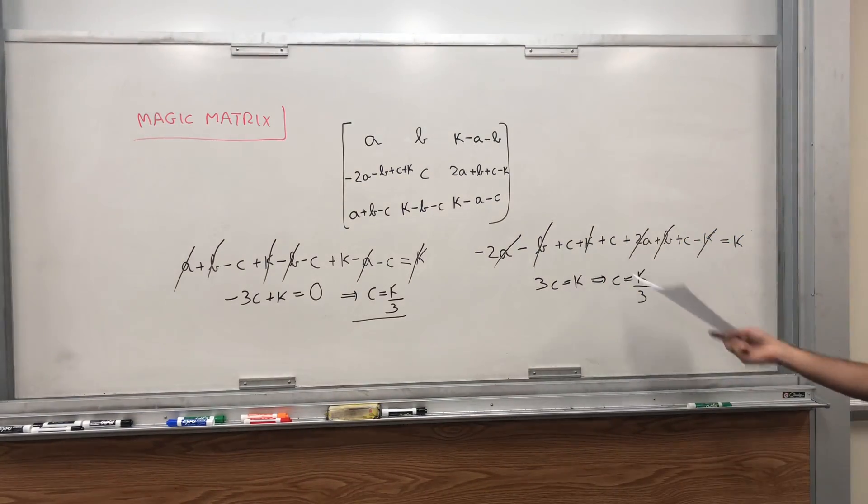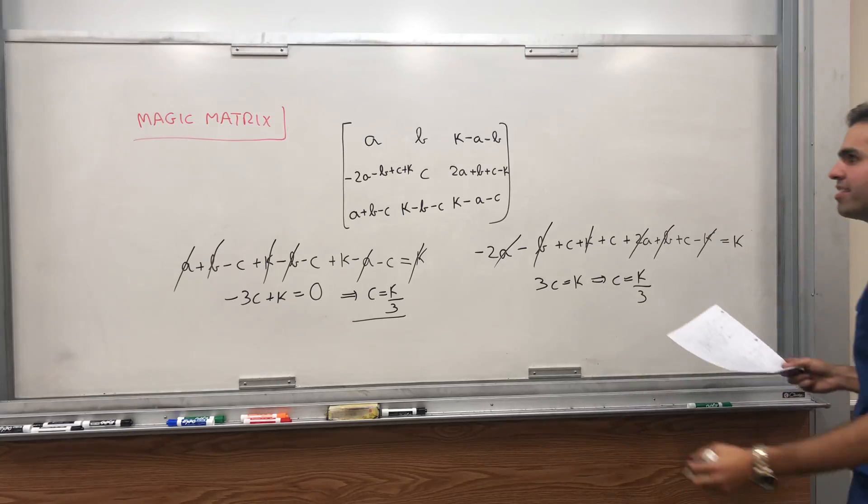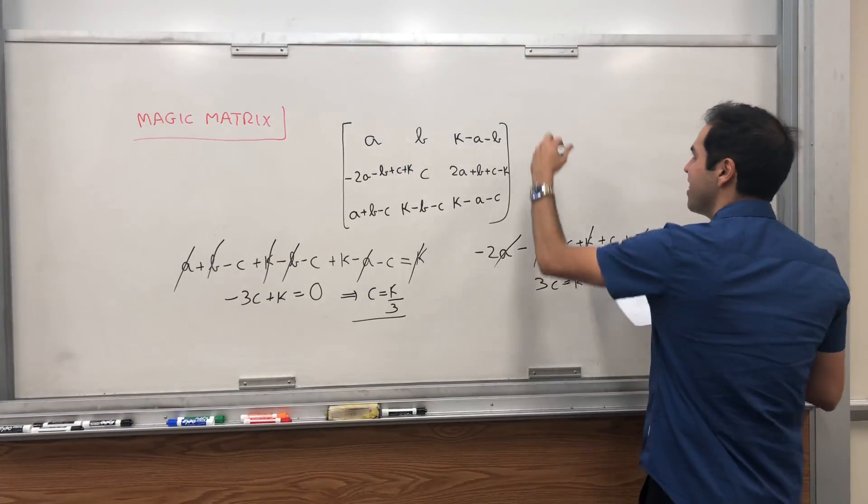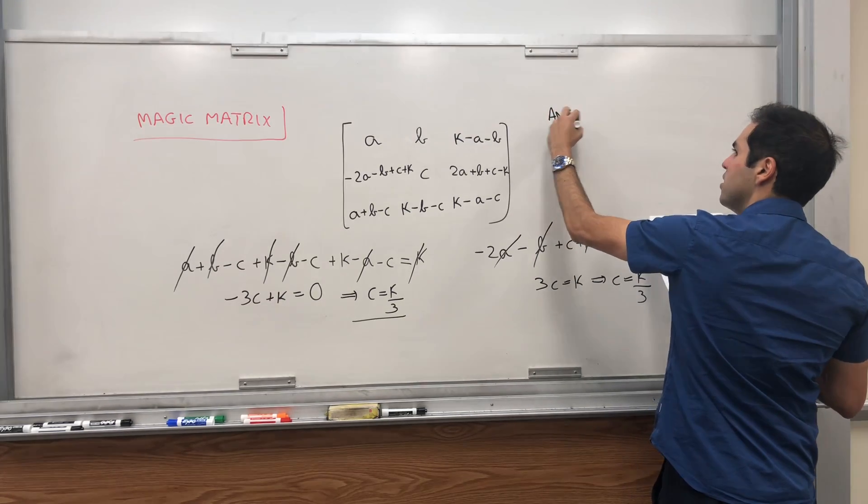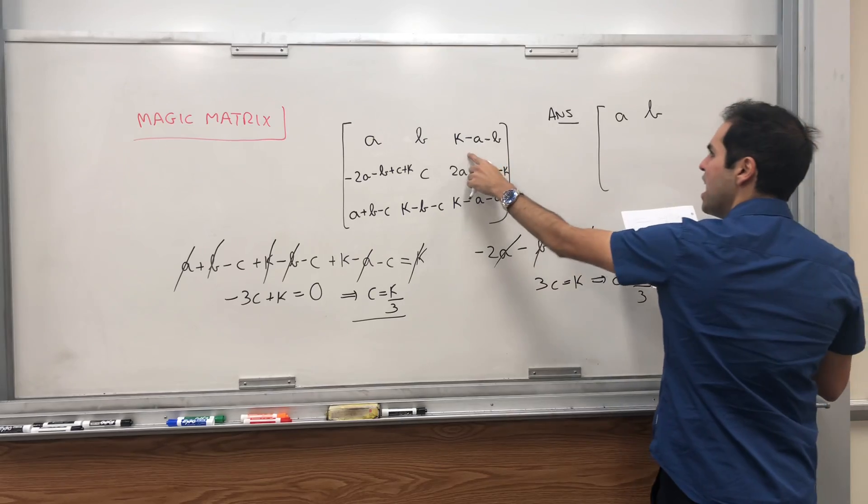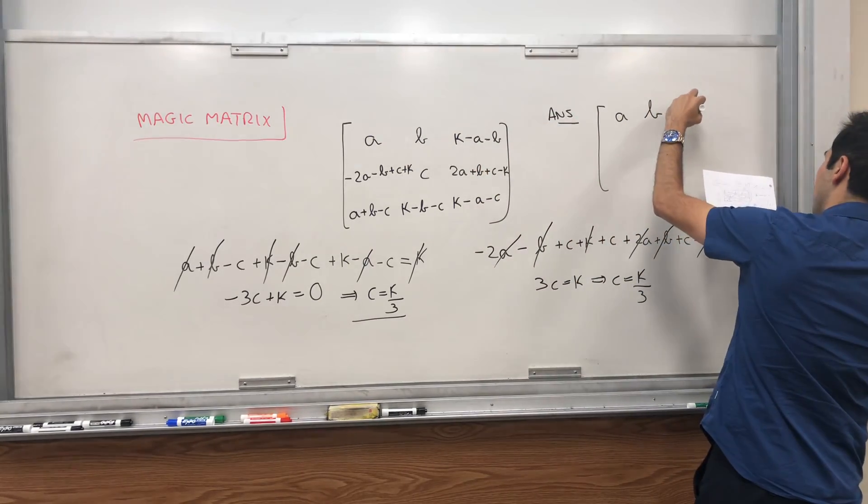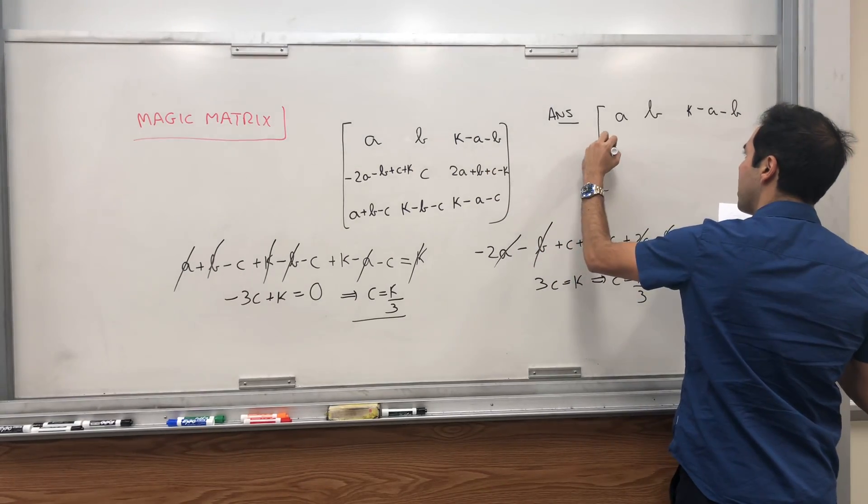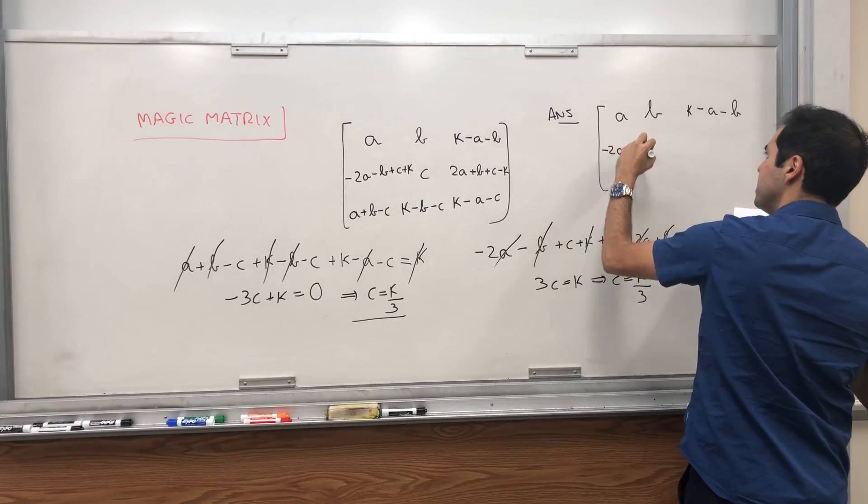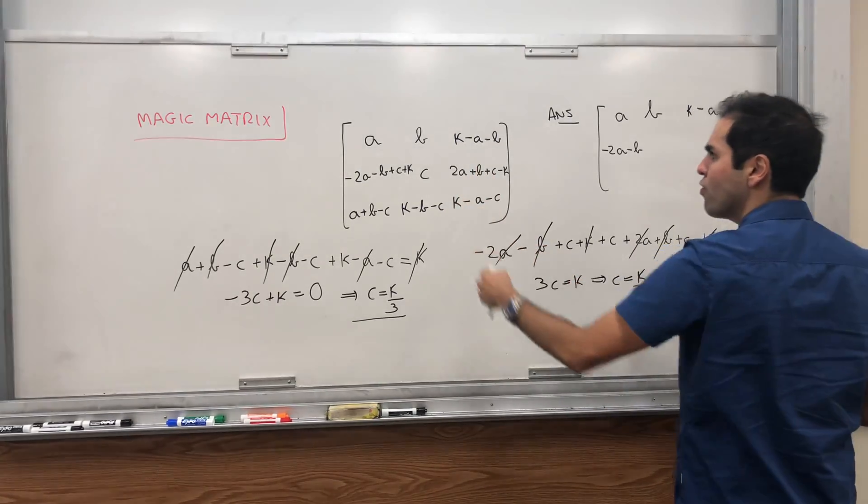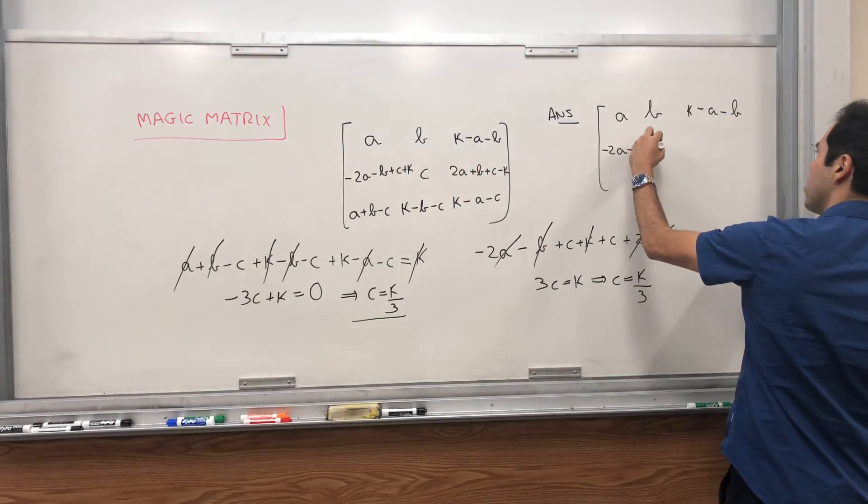So we have checked all our things, so it turns out the answer to our magic matrix then becomes as follows: it's simply a, b, k minus a minus b, minus 2a minus b plus c plus k - so k over 3 plus k, that's 4k over 3.